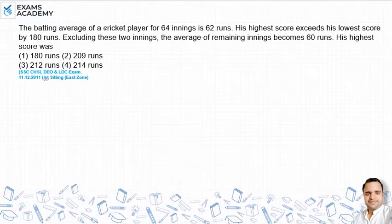The batting average of a cricket player in 64 innings is 62 runs. His highest score exceeds the lowest score by 180 runs. Excluding these two innings, the average of the remaining innings becomes 60 runs. His highest score was?